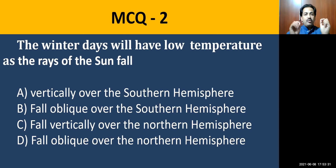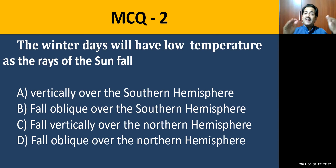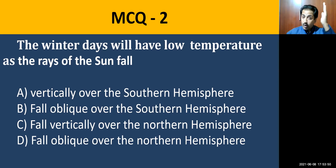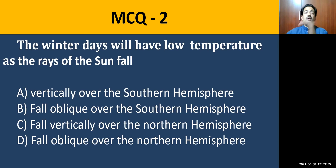Now the second MCQ: the winter days will have low temperature as the rays of the sun fall — four options: vertically over the southern hemisphere, obliquely over the southern hemisphere, vertically over the northern hemisphere, or obliquely over the northern hemisphere. Which is correct during winter days?